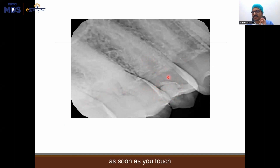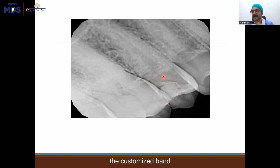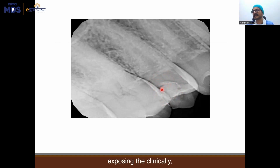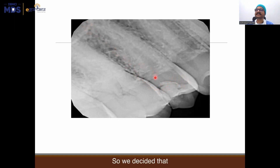Initially, because the pain did not linger, I made a provisional diagnosis of reversible pulpitis. I redid the restoration with a customized band, retainer, and wedge assembly. There was definitely remaining dentine thickness — it was not exposing the pulp chamber clinically. However, under follow-up, even after a few days, the case deteriorated. There was increased sensitivity to the cold test, to the extent of severe pain as soon as I touched it. There was also apical periodontitis clinically. So we decided to go for root canal treatment and made a diagnosis of irreversible pulpitis.